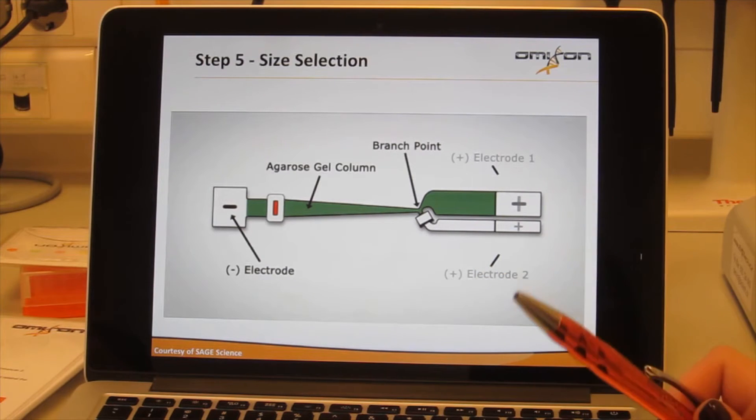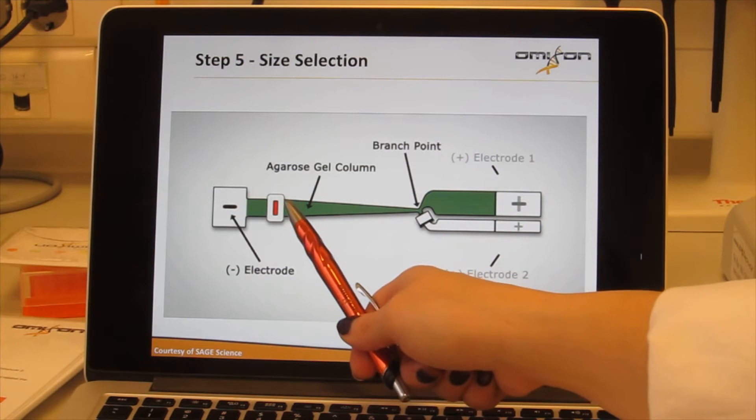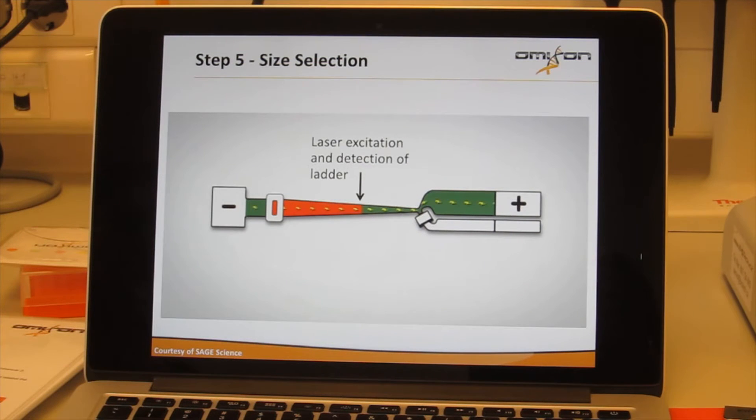The idea is that we have two fluorescently labeled markers. One marker is a 50 base pair fragment and the second marker is 150 base pairs. What we do is mix those two with our library and load the library and marker mixture in this loading port where the red is right here, and then we turn on the current.